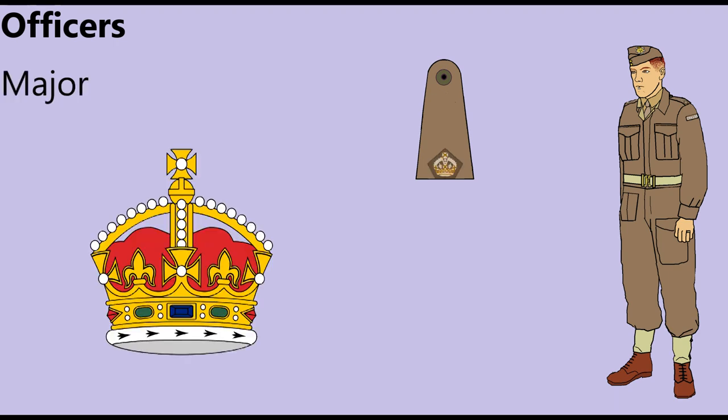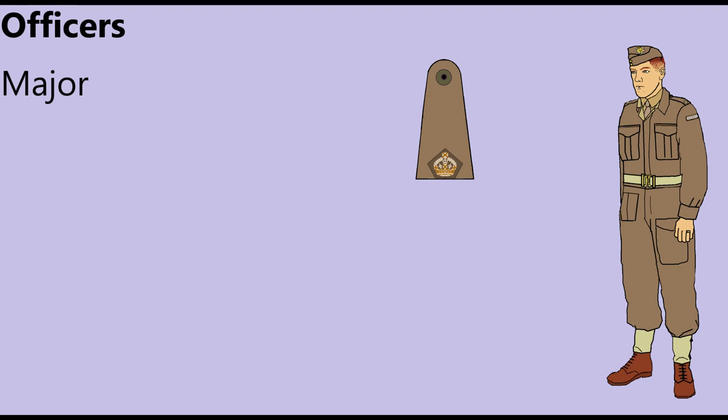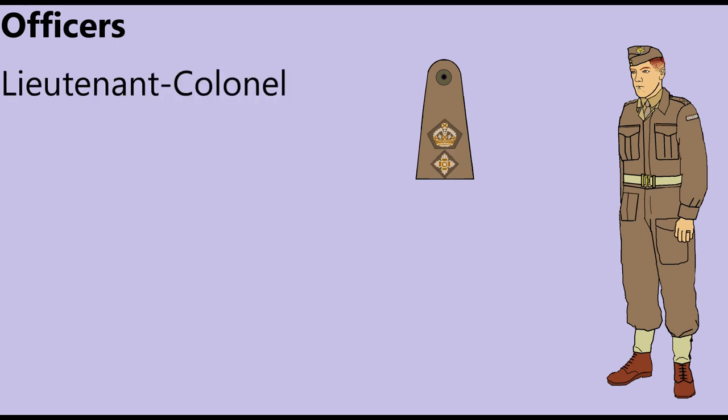A Major wore a small crown on his epaulette, and increasingly commanded company-sized subunits as the war went on, though a major might also serve as second in command of an infantry battalion, armored regiment, or artillery regiment. A Lieutenant Colonel wore a rank star surmounted by the crown, and usually led a battalion or regiment-sized unit of 600 to 1,000 men.